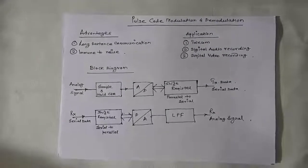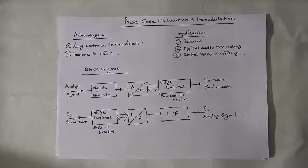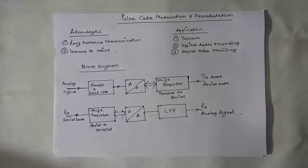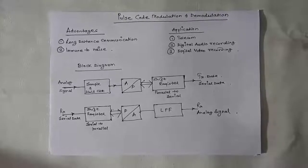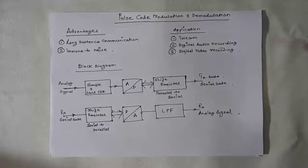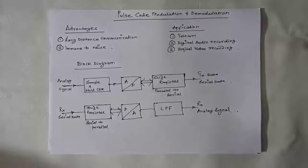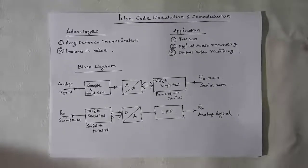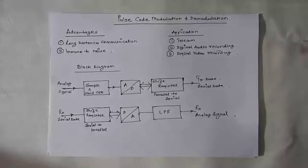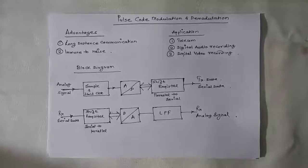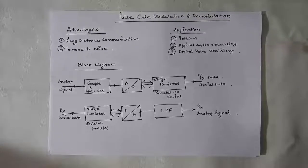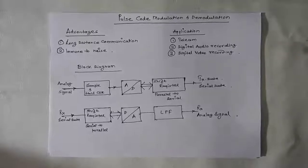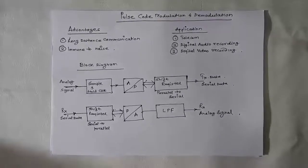Second, it is immune to noise. Even if the shape of the signal changes, you can definitely decode it at the receiver because you are coding the signal at the transmitter. These are the two major advantages of pulse code modulation: long distance communication and immunity to noise.